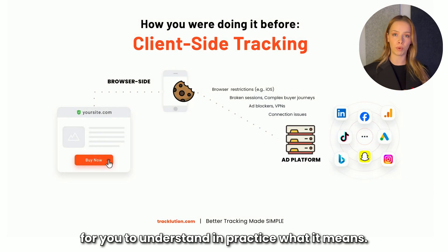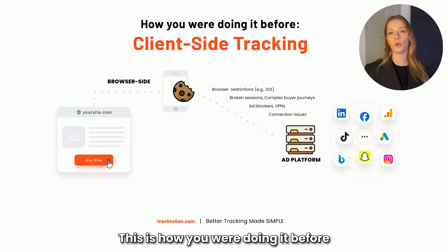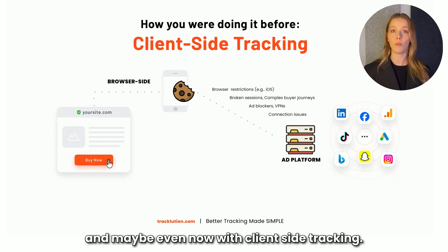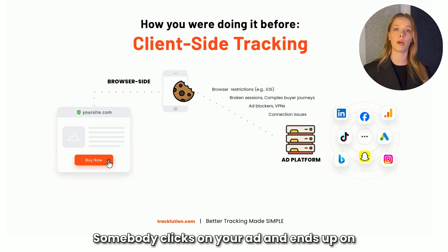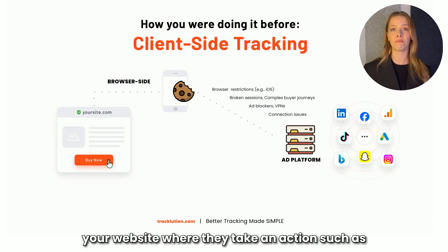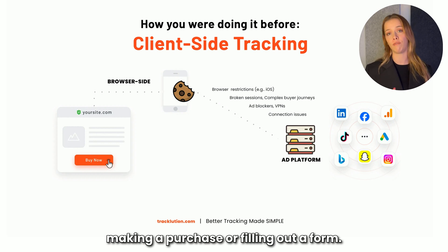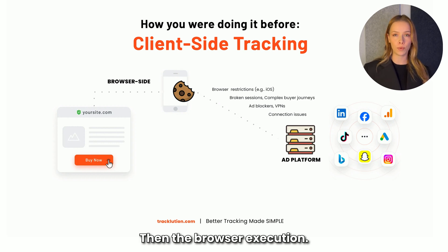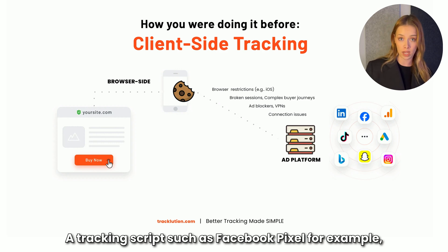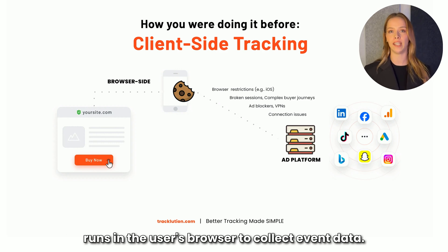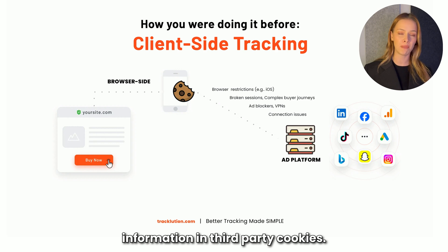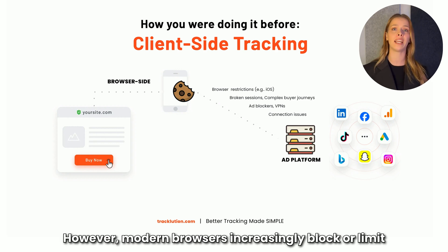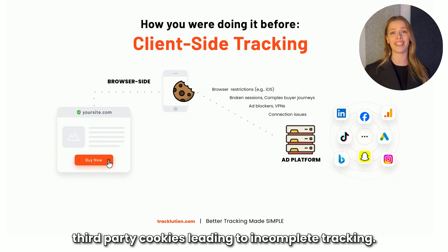So, to understand in practice what it means — this is how you were doing it before, and maybe even now, with client-side tracking, the easy option. First, there is user interaction: somebody clicks on your ad and ends up on your website where they take an action, such as making a purchase or filling out a form. Then the browser executes a tracking script, such as Facebook Pixel, which runs in the user's browser to collect event data. It typically stores the tracking information in third-party cookies. However, modern browsers increasingly block or limit third-party cookies, leading to incomplete tracking.